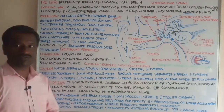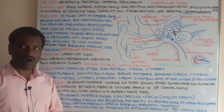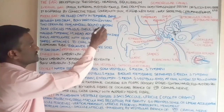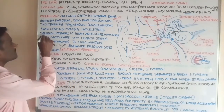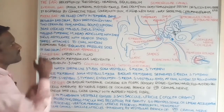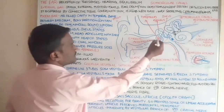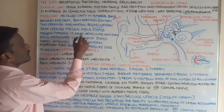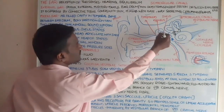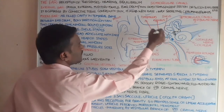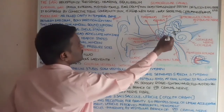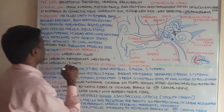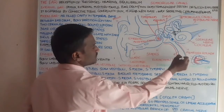The malleus is a modification of the articular, the incus is a modification of the quadrate, and the stapes is a modification of the hyomandibulum. The stapes is the smallest bone in the human body. The malleus connects with the tympanic membrane, the head of the malleus articulates with the incus, the incus articulates with the head of the stapes, and the stapes attaches to the oval window.